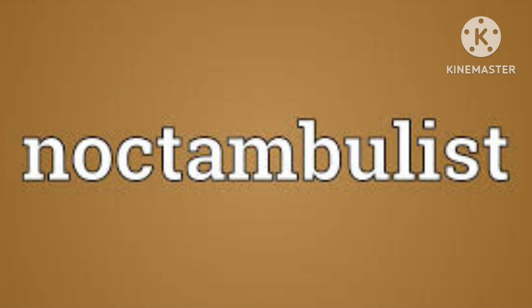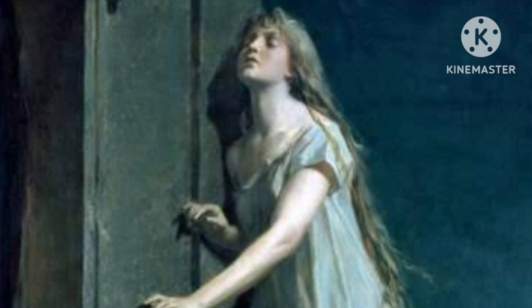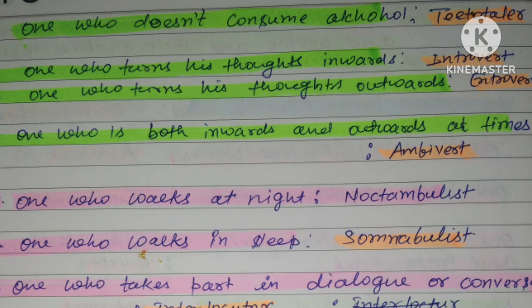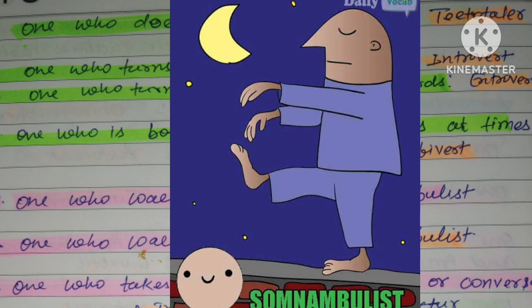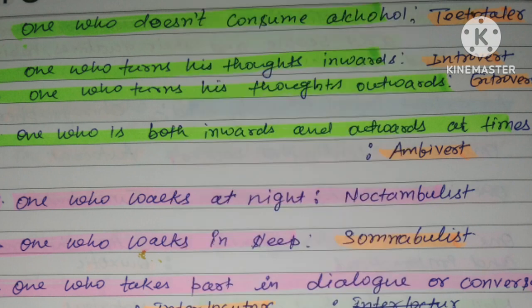A noctambulist is a person who walks at night — someone who has the condition of walking at night. Similarly, a somnambulist: 'somnia' means sleep, and 'ambulist' means walker. So a somnambulist is a person who walks in sleep — someone who has the condition of sleepwalking. Noctambulist walks at night; somnambulist walks in sleep.